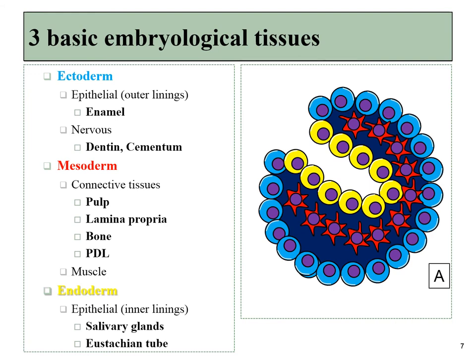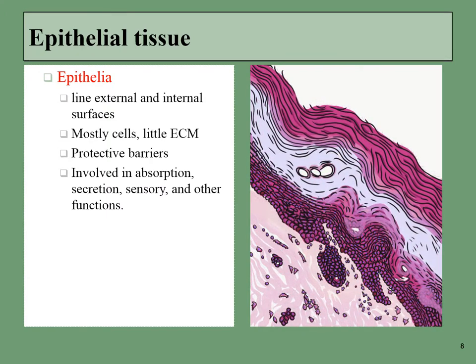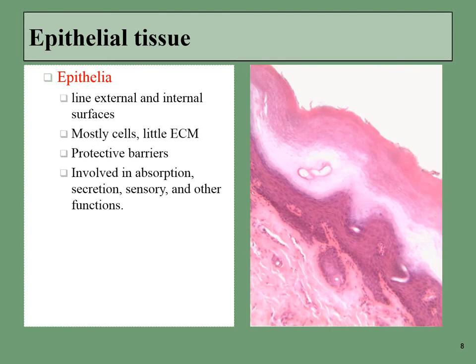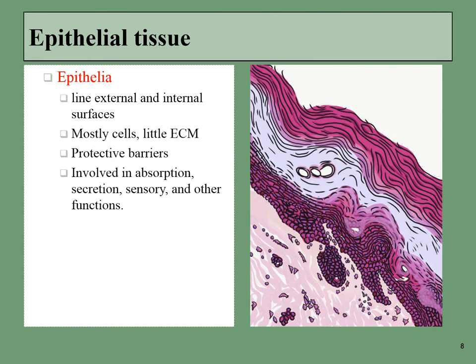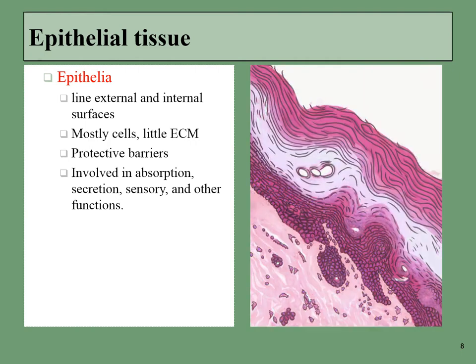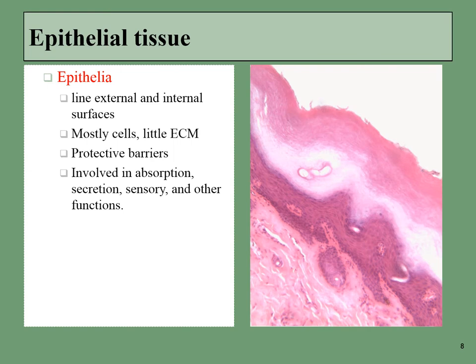Some of the tissues we're going to learn about include enamel, dentin, and cementum, which are all derived from the outer ectodermal layer. Pulp, the lamina propria, bone tissue, the periodontal ligaments, and muscles in the oral cavity are all derived from mesoderm. Salivary glands and the eustachian tube are all derived from endoderm. For the rest of this lecture, however, we'll be focusing on the four main tissue types named based off of what histologists saw under the microscope from human organs.